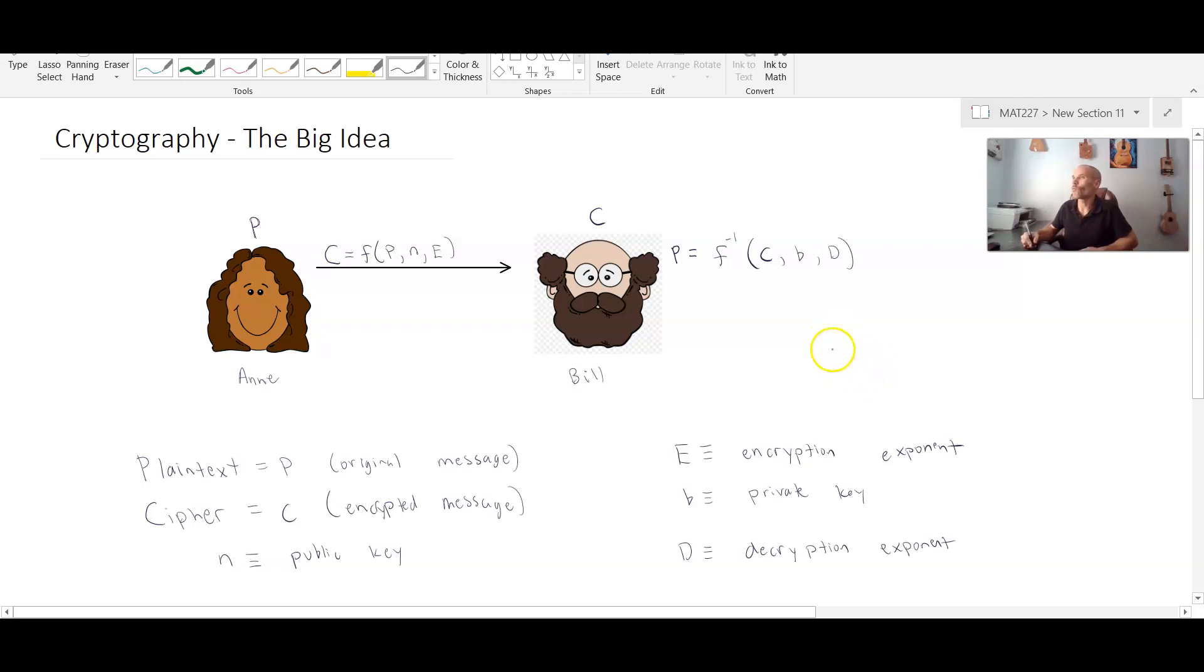So from what we know about functions, if we want to compute p, p is equal to the inverse, an inverse function involving c. Now I'm going to omit the b and d because these are just some constant values. It's p and c that are really considered the input and output, like the x and the y in a function. So if I apply or if I take the inverse of c, I get p.